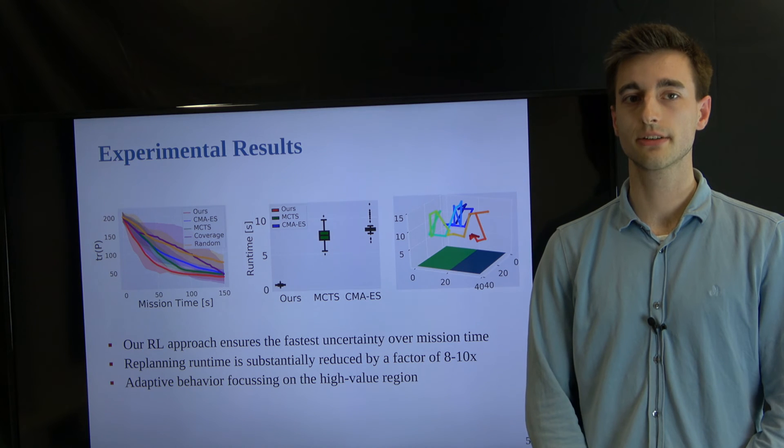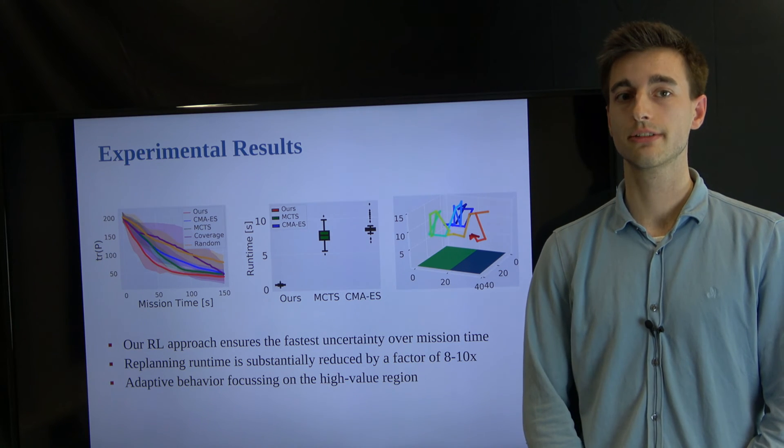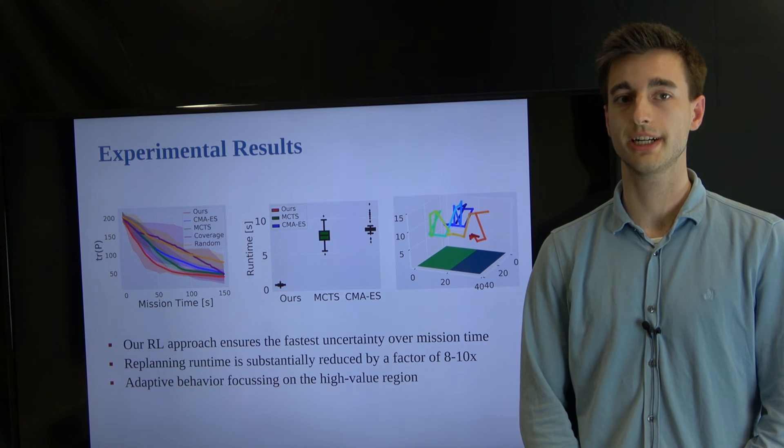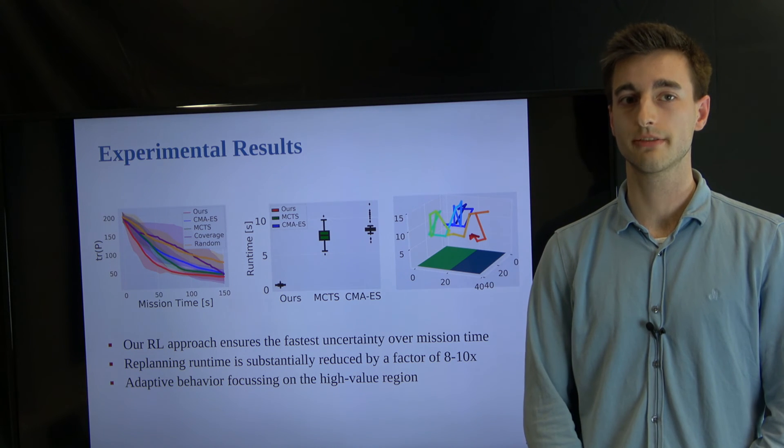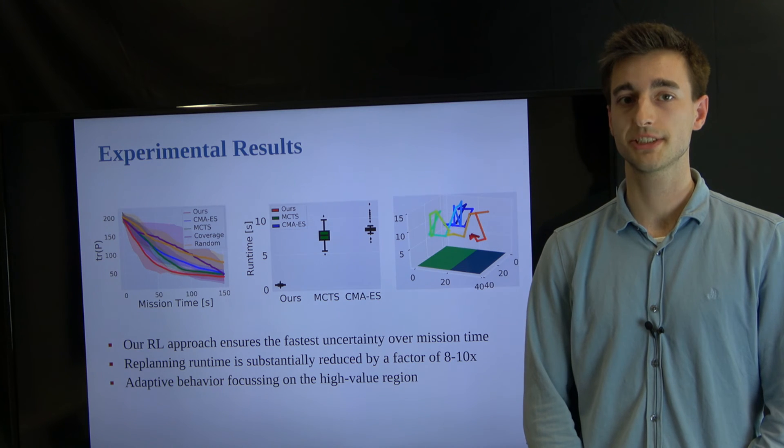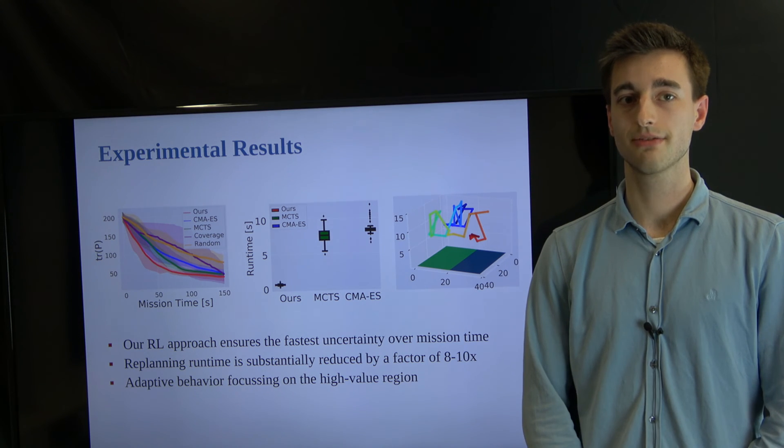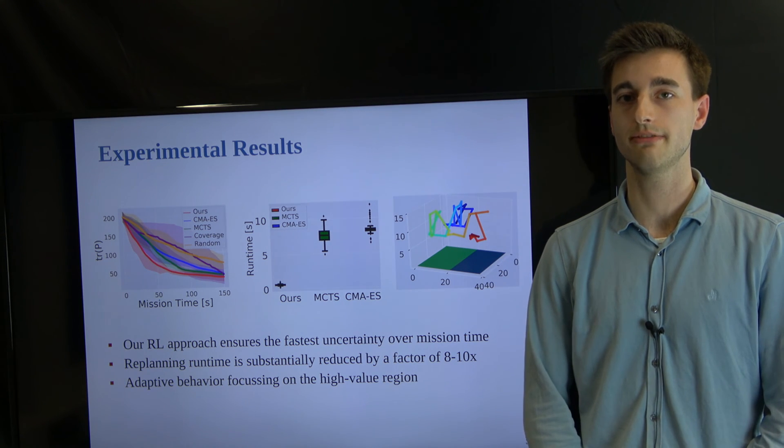Our evaluation against other informative path planning benchmarks show that, on average, our reinforcement learning approach ensures the fastest uncertainty reduction while ensuring stable performance over changing environments. Second, run time is substantially reduced by a factor of 8 to 10. The planned path validates the adaptive behavior of our approach exploring the terrain with focus on the green, high-value region.